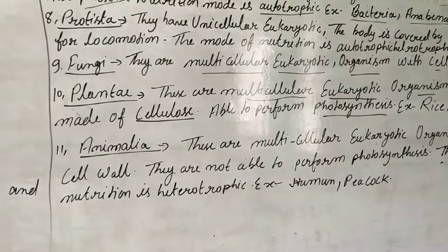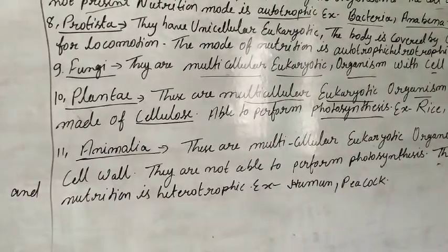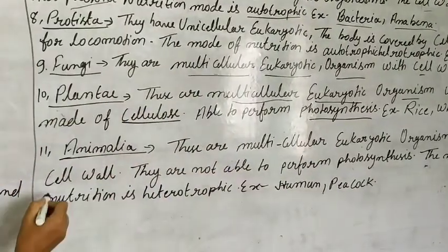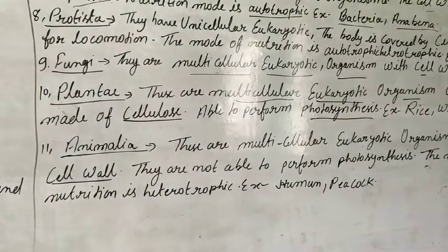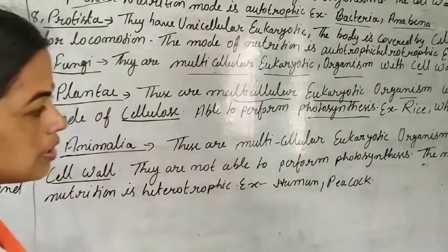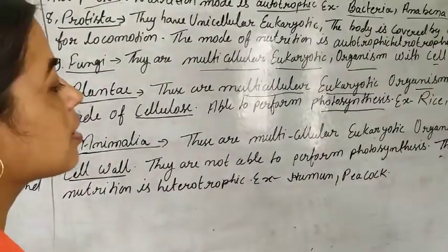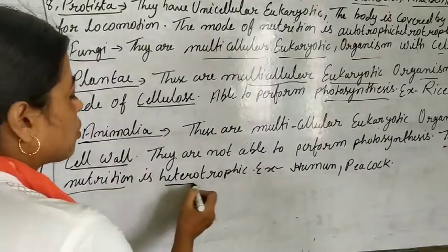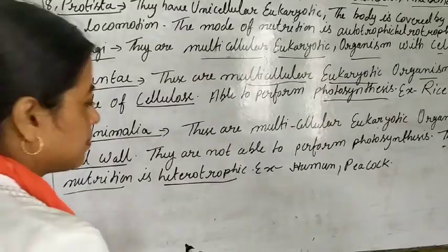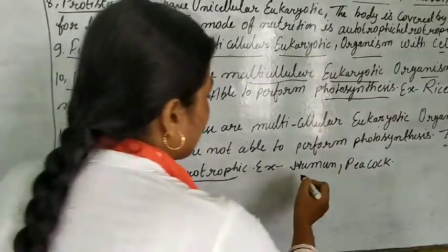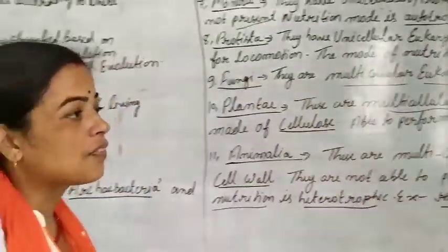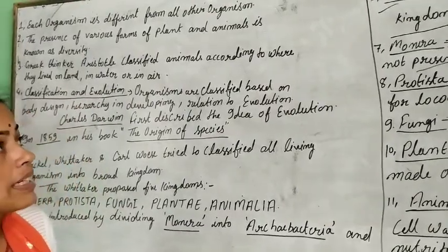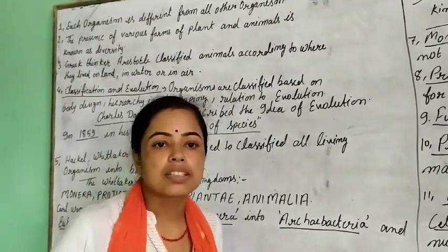Examples of Plantae include rice and wheat. The last kingdom is Animalia, which is related to human beings. These are multicellular eukaryotic organisms without a cell wall, not able to perform photosynthesis. Their mode of nutrition is heterotrophic — they depend on other organisms for food. Examples include humans and peacock. This is the first video of diversity; in the next video we will discuss more related topics. Thank you.